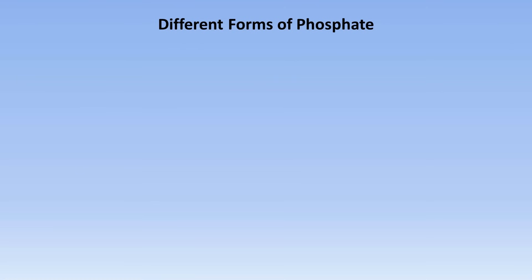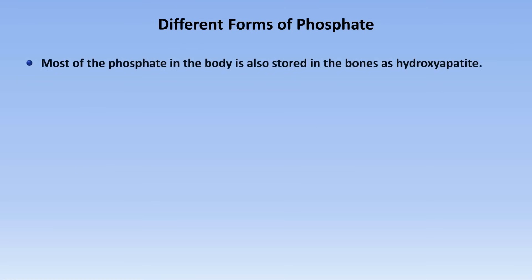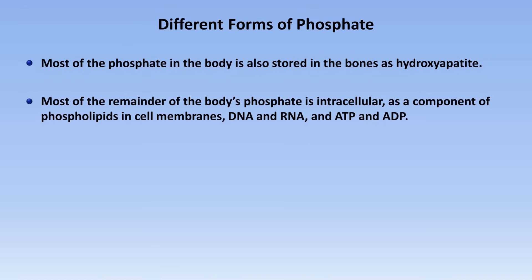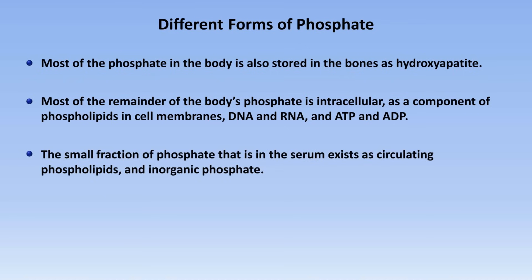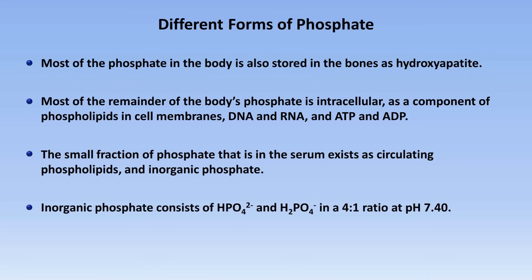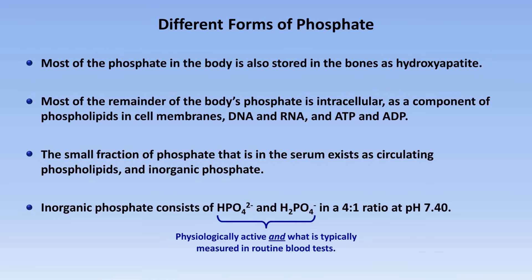As with calcium, there are also different forms of phosphate in the body. Most is also stored in the bones as hydroxyapatite. Of the remainder, most is intracellular as a component of phospholipids in cell membranes, DNA and RNA, and the energy-storing compounds of ATP and ADP. The small fraction of phosphate that is in the serum exists as circulating phospholipids and inorganic phosphate. Inorganic phosphate consists of HPO4 and H2PO4 in a 4 to 1 ratio at a pH of 7.40. The sum of HPO4 and H2PO4 is both what is physiologically active and what is typically measured in routine blood tests.